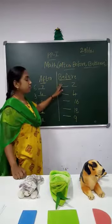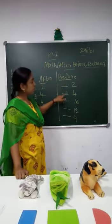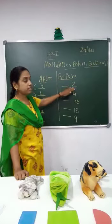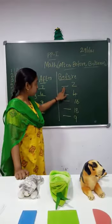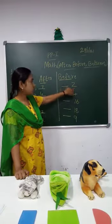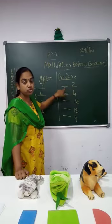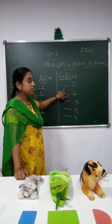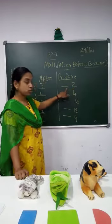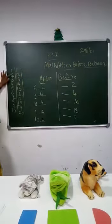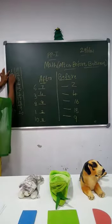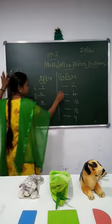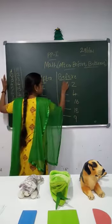Now we will see for the before number. For the before number, you will get a dash before the number. So first you get a dash and then the number — you should fill in the dash. Here is two — before two you get number one, so you write one.